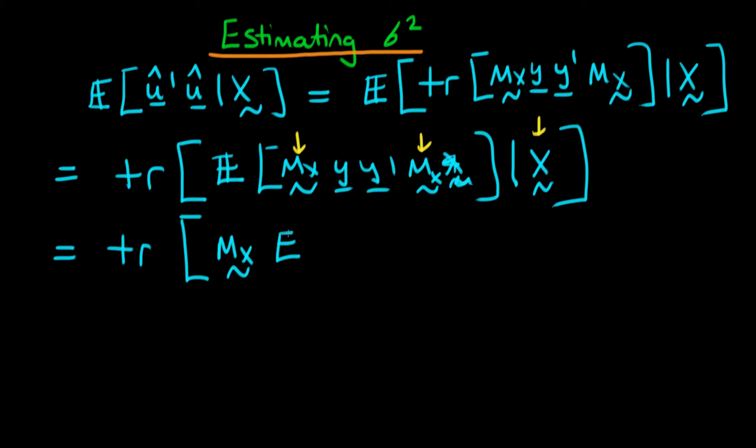So the only thing that we're going to be left with to take the expectation is, so we're going to have mx times the expectation of y times y primed given that we have x, and then multiplying it all afterwards by mx primed. Actually I should say that we've got mx primed here rather than mx.